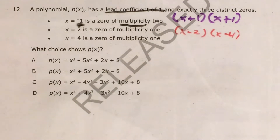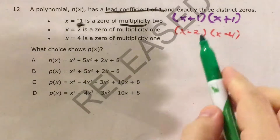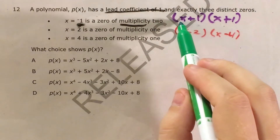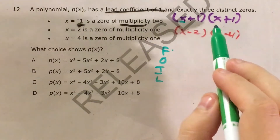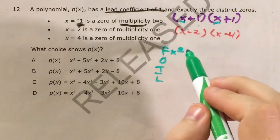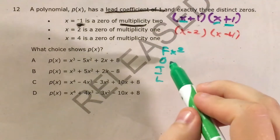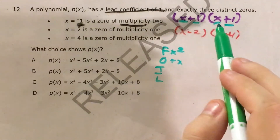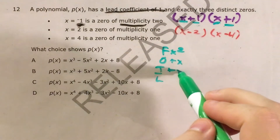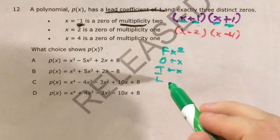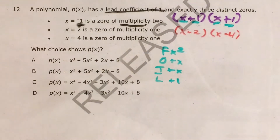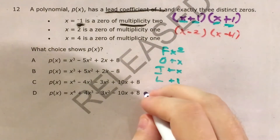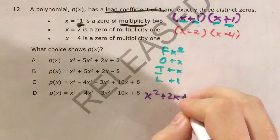Let's go ahead and multiply these pairs of binomials that I intentionally wrote in different colors. To FOIL x plus 1 and x plus 1: for my first terms, x and x give me x squared. For my outside, x and plus 1 give me plus x. For my inside, plus 1 and x give me plus x. My last terms, plus 1 times plus 1 gives me just plus 1. After combining like terms, I get x squared plus 2x plus 1.